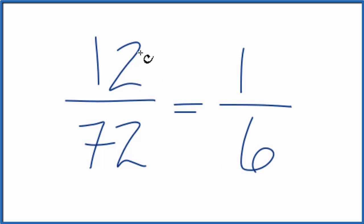So you could simplify 12/72 to 1/6. And we can't simplify this any further. This is the lowest form, the lowest terms for simplifying or reducing the fraction 12/72.